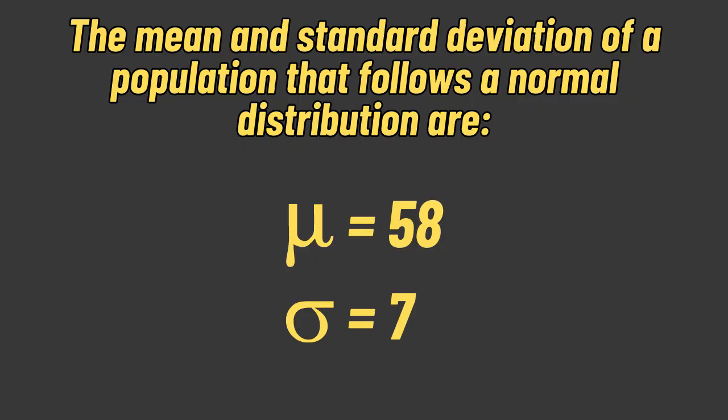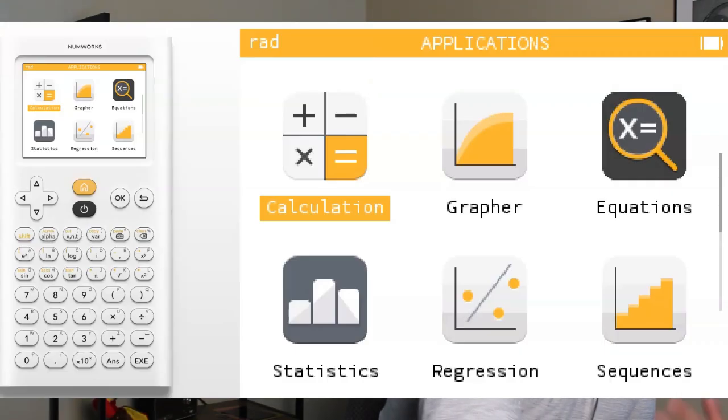All right, let's say a particular problem throws at us that a set of data falls in normal distribution with a mean of 58 and a standard deviation of 7, and we might be asked a couple different probability or proportion-based questions with this. So first, what we're going to do is we're going to go to our Numerus Calculator. We're going to hit the Home button.